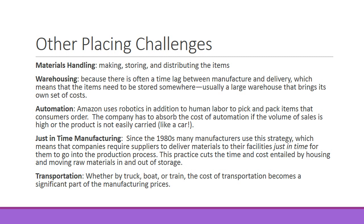Finally, transportation. Whether by truck, boat, or train, the cost of transportation becomes a significant part of manufacturing prices. Large products are rarely transported via airplane because it's so expensive. A Mercedes shipped from Germany to the United States comes over on a boat. Trains are a cheap, effective way to move large amounts of a product from one spot to another. And of course we all see trucks on the highway delivering items — it's just part of the manufacturing process.